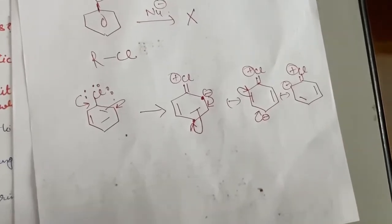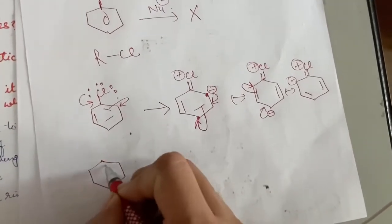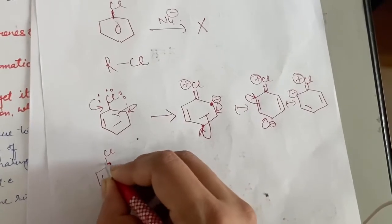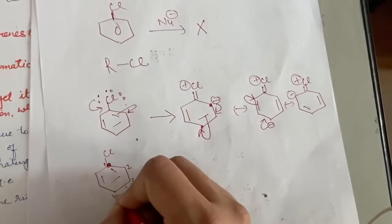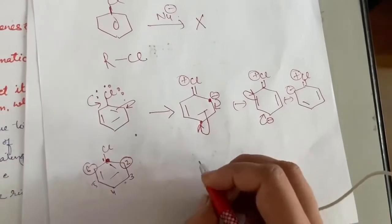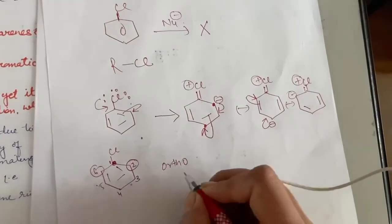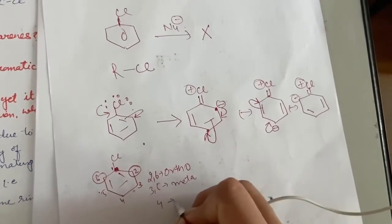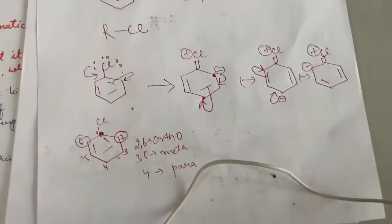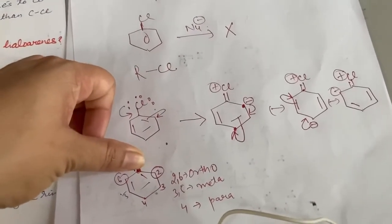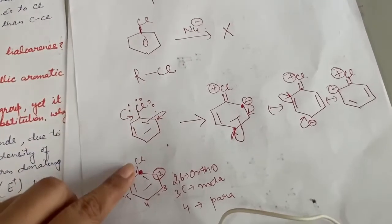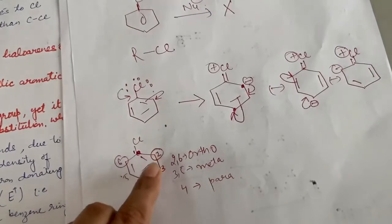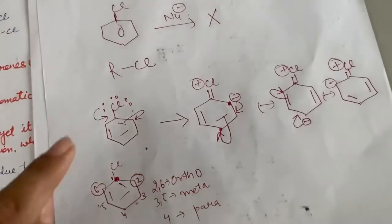Before proceeding, let's clarify the ortho-para-meta concept. If halogen is attached to benzene, the position of halogen is numbered 1. Adjacent positions 2 and 6 are called ortho positions; positions 3 and 5 are called meta positions; position 4 is called the para position. With respect to Cl, if no functional group is attached, there is no ortho, para, or meta. Whenever any functional group is attached, we determine positions relative to it: adjacent positions are ortho, next are meta, and the one opposite is para.